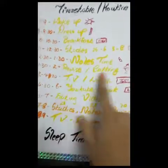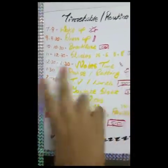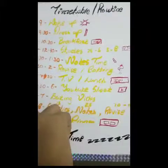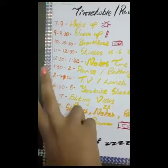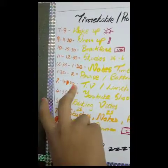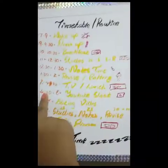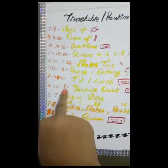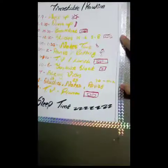One thirty to two is my resting or bathing time, and two to four thirty is my TV and lunch time. Four thirty to six is my YouTube shoot time.